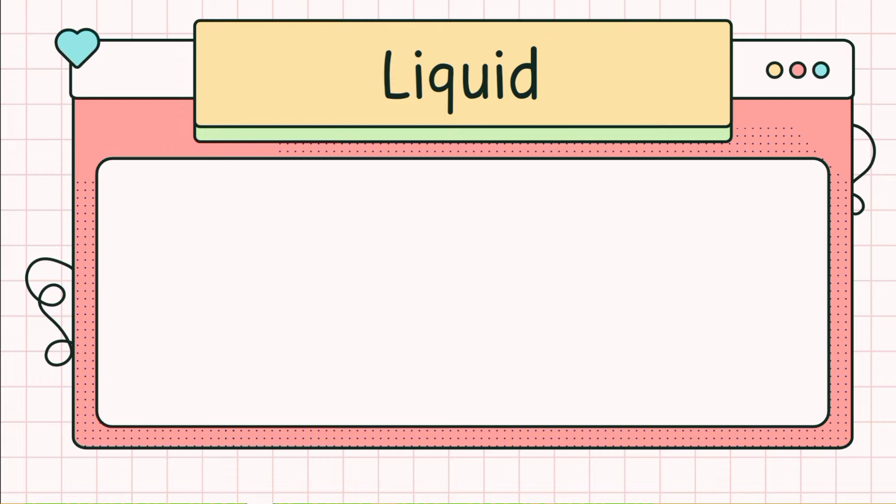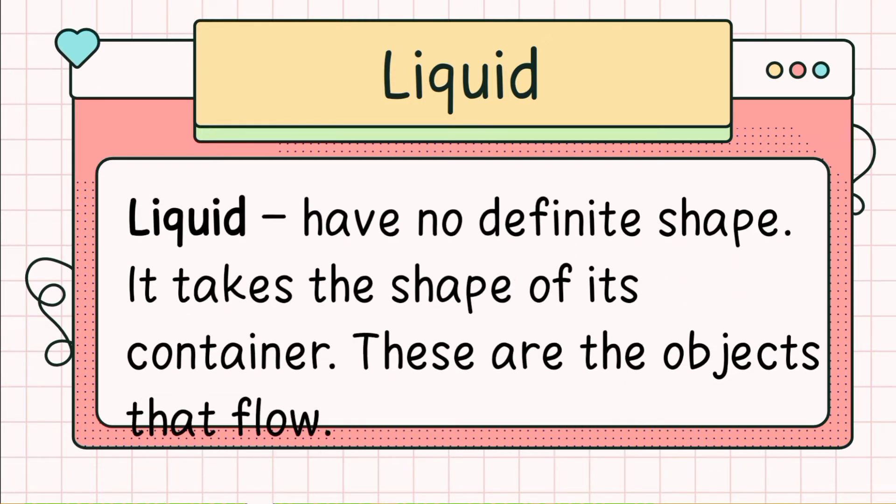Let's talk about liquid. Liquid has no definite shape. It takes the shape of its container. These are the objects that flow.